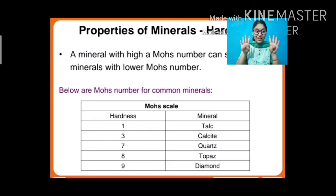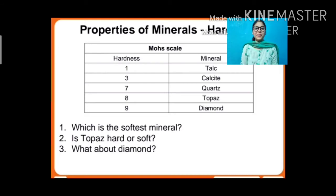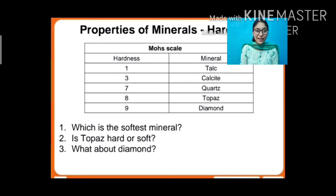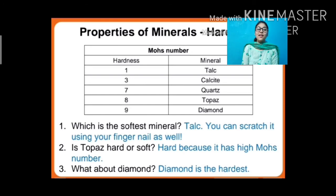Topaz = 8 and diamond = 9. Which is the softest mineral? The one with the lowest number — that is talc, with a Mohs number of 1. Is topaz hard or soft? Its number is 8 so it is hard. What about diamond? Diamond has the highest number, 9, so it is the hardest. Talc is so soft you can scratch it using your fingernail.